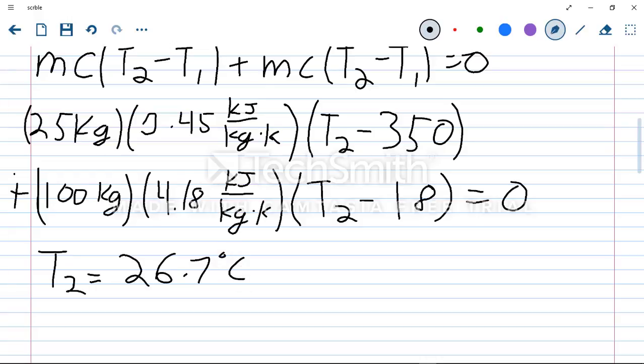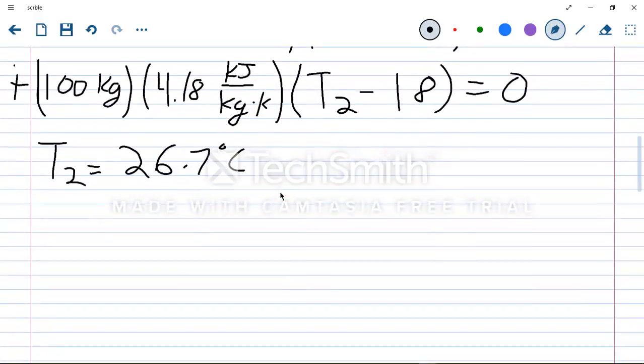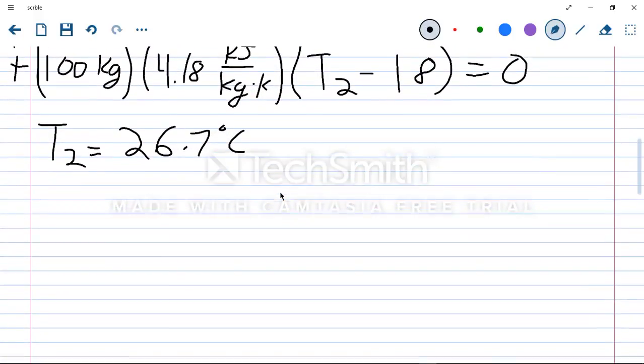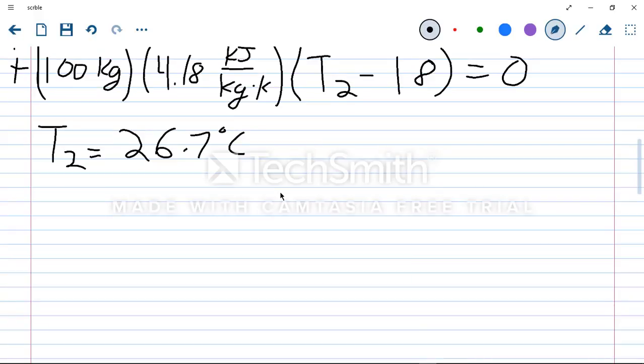We're going to need that when we calculate the change in entropy for each component of our system. So the change in entropy for the block and the change in entropy for the tank of water. That would be our next step, since we need to know the total entropy change in the system. For the block, we know that for an incompressible substance, our change in entropy is equal to the mass times the specific heat times the natural log of our final temperature over our initial temperature.